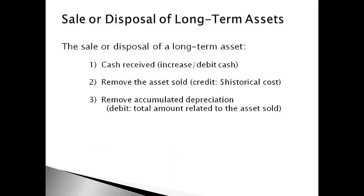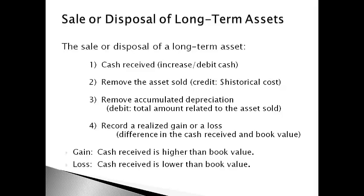Long-term assets that are sold or disposed of are removed from the balance sheet. The accumulated depreciation related to the asset that is sold is also removed from the balance sheet. A gain is recorded when cash received is higher than book value. A loss is recorded when cash received is lower than book value.